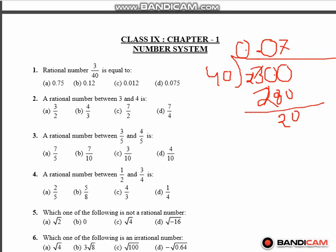We take a number which bisects 20 by 40. 5 of the 20, so it becomes 5 and 20 becomes 0. So the answer is 0.075. So this is the correct option.